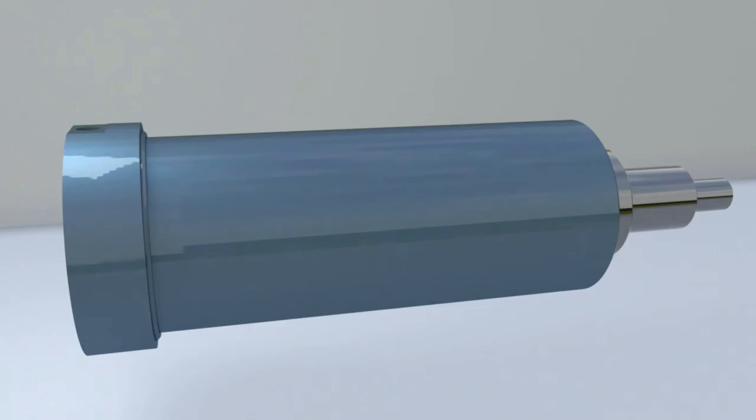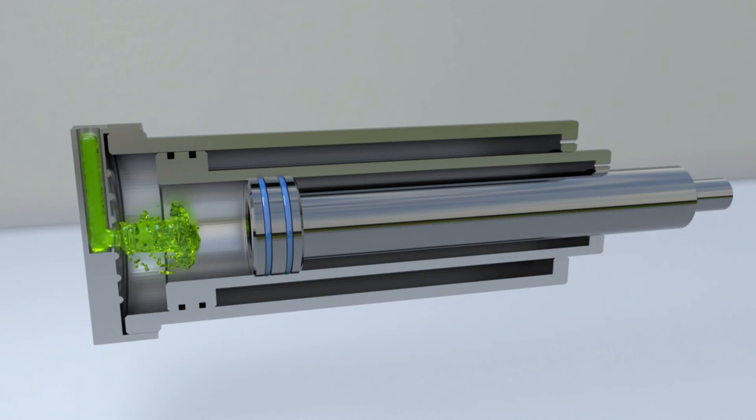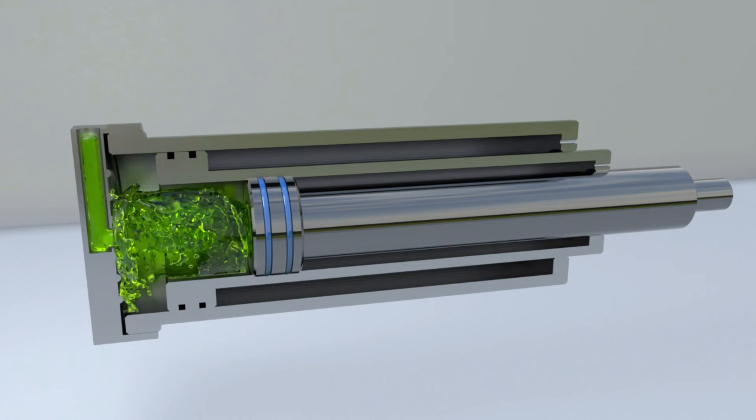A telescopic cylinder should be used in this case. This type of cylinder is based on the telescope principle. The cylinder rod consists of sections that are inserted one into the other.